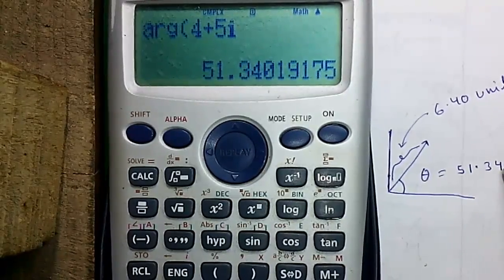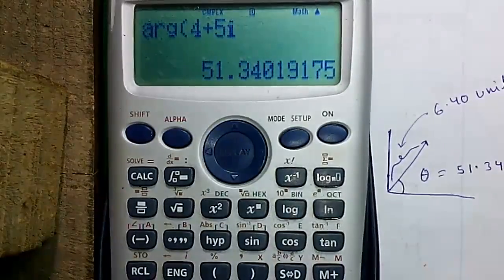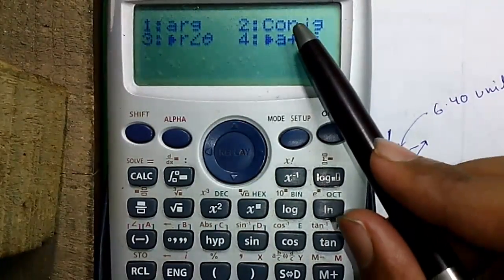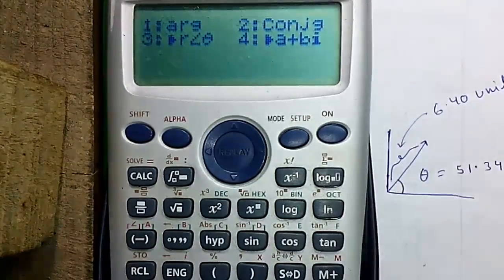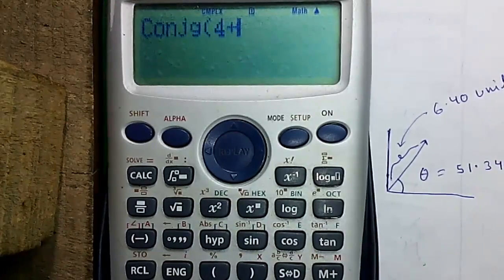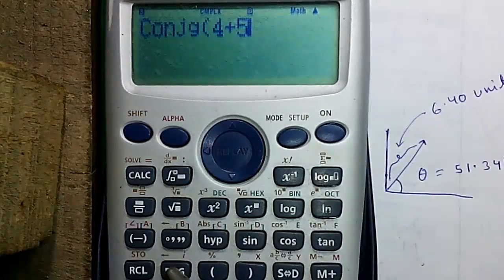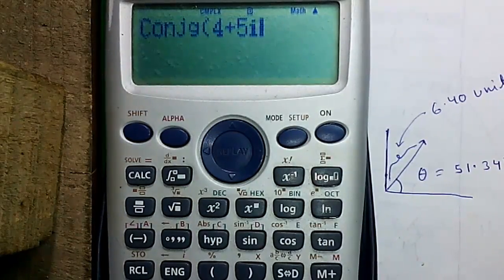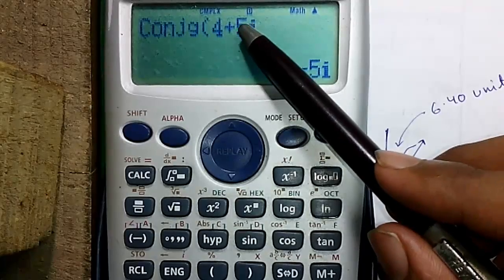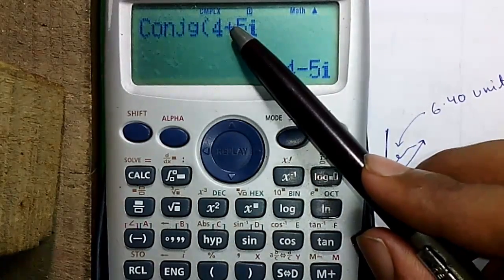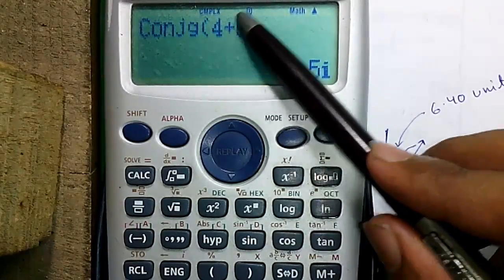Next, conjugate of a complex number. For i, press shift and this ENG button. The conjugate is nothing but the same number with the change in sign. It was plus, changed to minus. Let's try with minus. It's minus changed to plus.